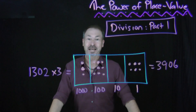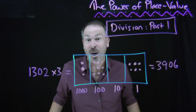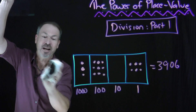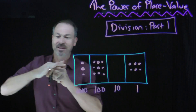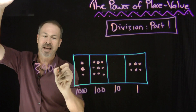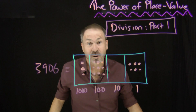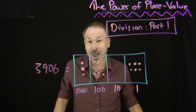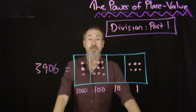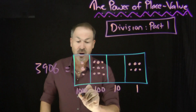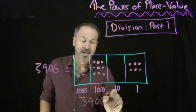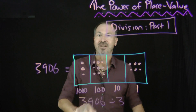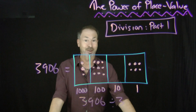Alright, now let's get crazy. Let's see if we can do this backwards. Pretend you didn't see the beginning question. Suppose I just gave you this final answer: three thousand nine hundred and six. And let me ask what got tripled to give me this answer — that is, can we do the multiplication backwards? Most people call doing multiplication backwards division: three thousand nine hundred and six divided by three.